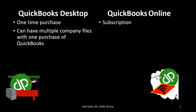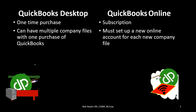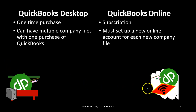The next difference is that the desktop version can have multiple company files with one purchase of QuickBooks, whereas with the online version, we must set up a new online account for each new company file. With the desktop version, you can think of it like Microsoft Word — once the program is downloaded, we can start multiple company files within that program without paying any added charges.